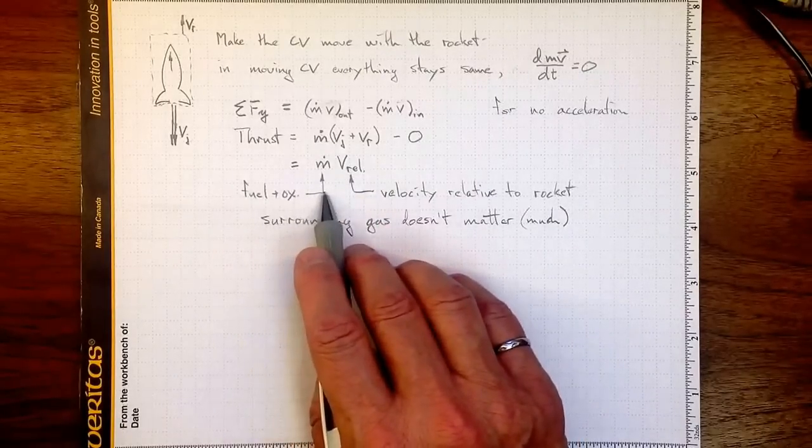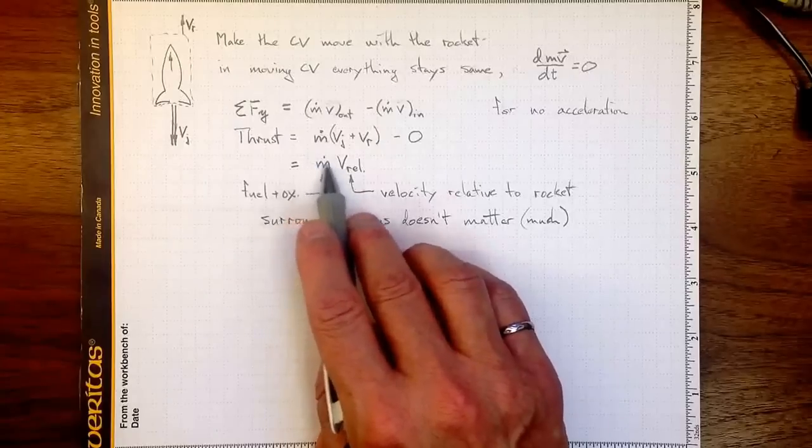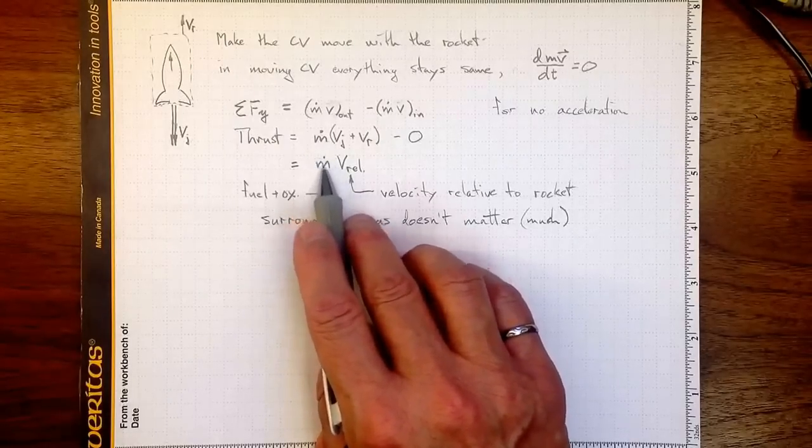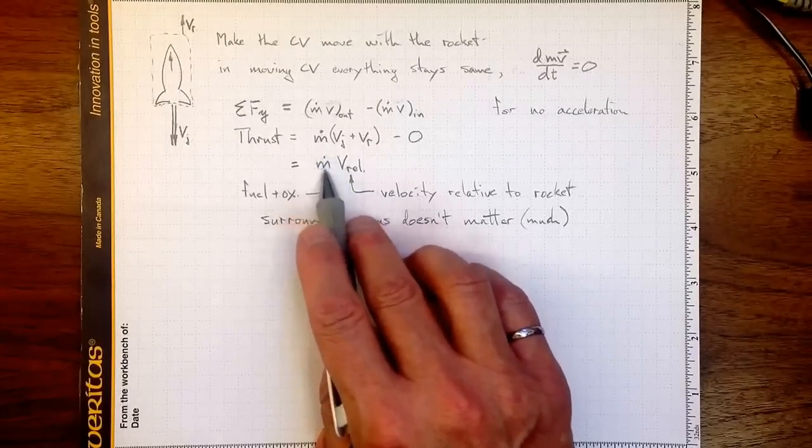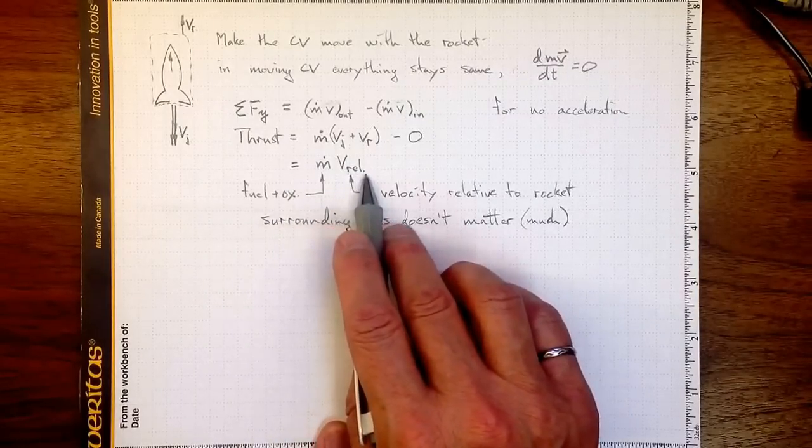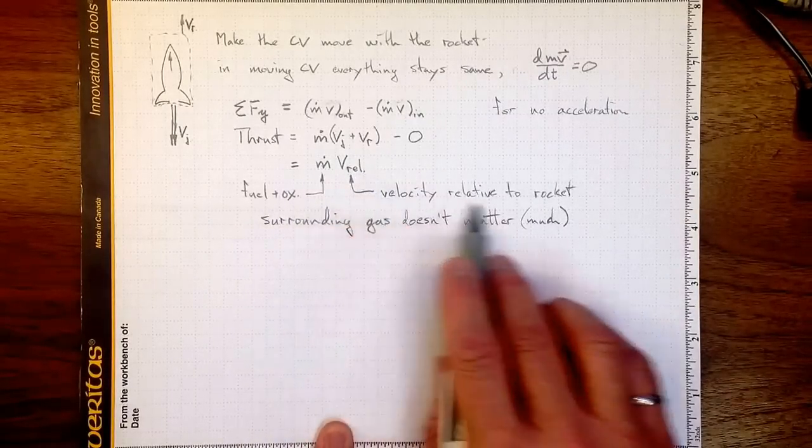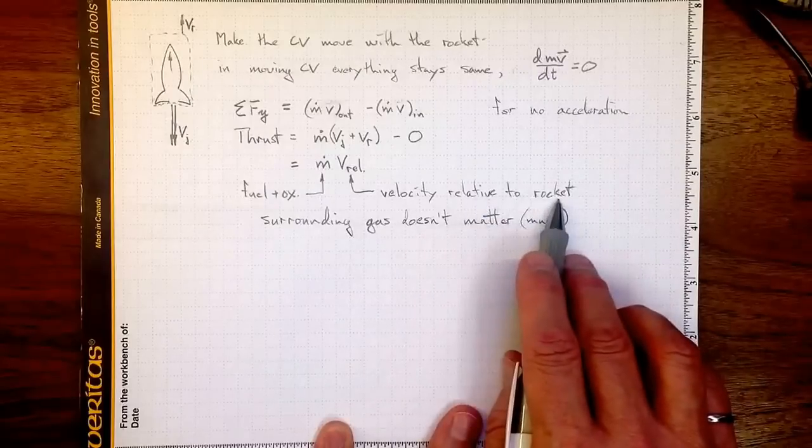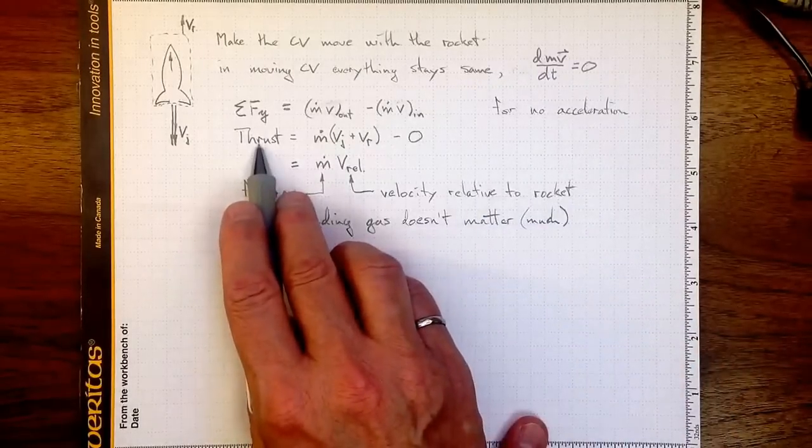Fuel and oxidizer combined together burn and come out of the back of the rocket really fast. So that's the mass flow rate, is just how quickly we're burning fuel and oxidizer. And how quickly it comes out of the back of the rocket, relative to the rocket, is what determines the thrust.